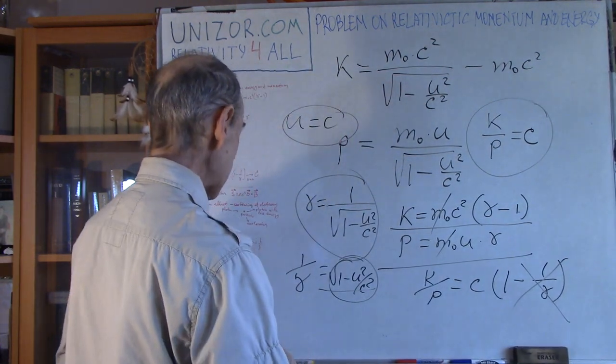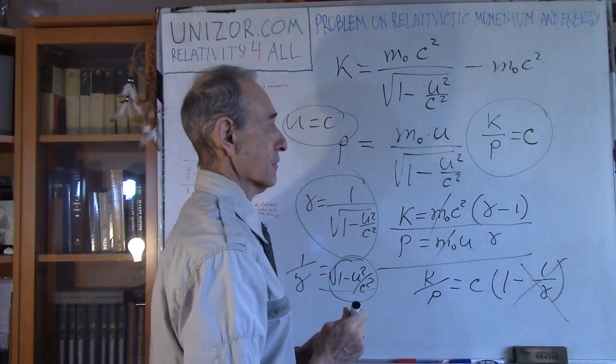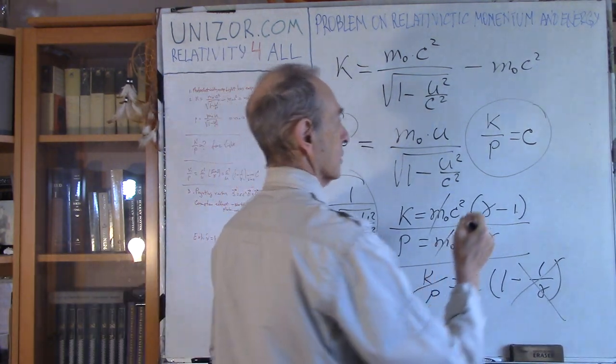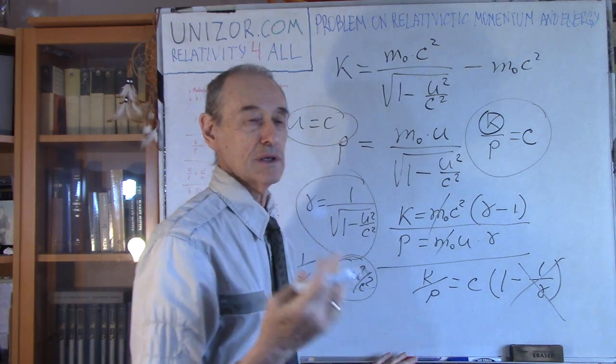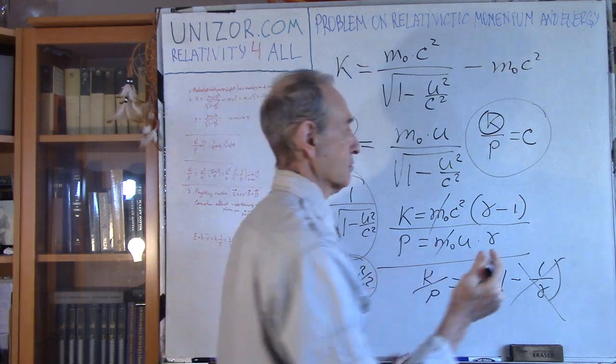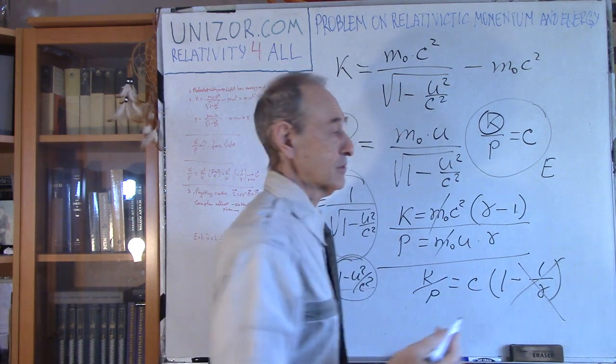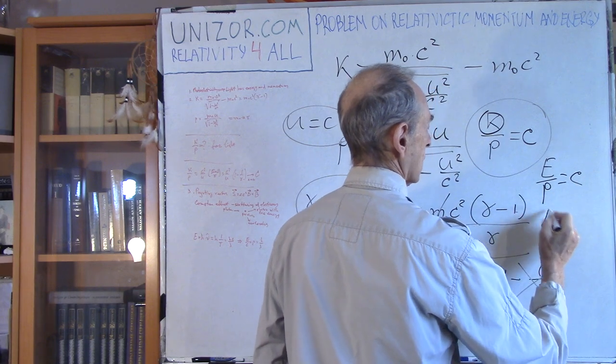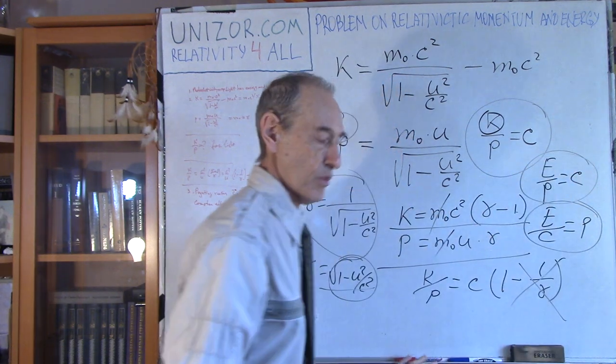That's basically the formula I wanted you to know about light. Usually the specification of kinetic energy is not emphasized for light because light has only kinetic energy. We use the letter E for general energy, so E divided by p equals c, or E divided by c equals p. This is the formula.